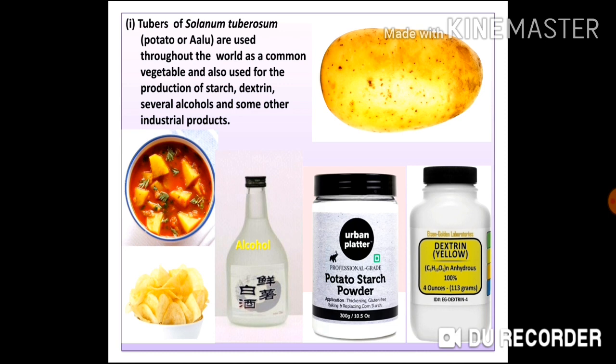The third category is food plants. Solanum tuberosum, commonly called potato or aloo, is used throughout the world as a common vegetable and also for the production of starch, dextrin, and several alcohols and industrial products. Potato curry, potato chips, potato starch powder, potato dextrin, and industrial alcohol are all obtained from potato.